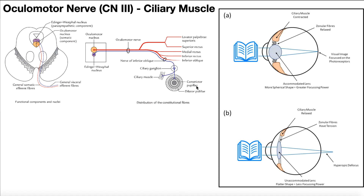The other muscle is the ciliary muscle. If we look inside the eyeball, the ciliary muscle goes around the circumference of the lens. When the ciliary muscle is relaxed, this is called an unaccommodated lens — the lens is flat, pulled more taut. This is better for seeing things that are further away. If you're looking at a distant tree or building, your lens is probably unaccommodated and the ciliary muscles are relaxed.